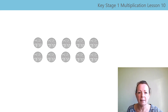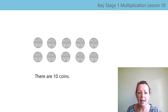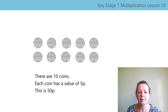What is the value of this set? Pause the video while you work it out. Did you see there were ten coins straight away? You might have had to count, but you might have seen that there were ten straight away. Let's say the stem sentences together: there are ten coins, each coin has a value of five-p, this is fifty-p. Well done.